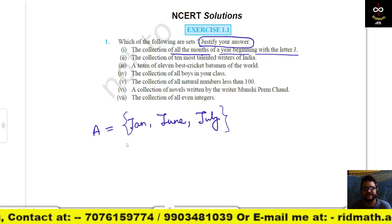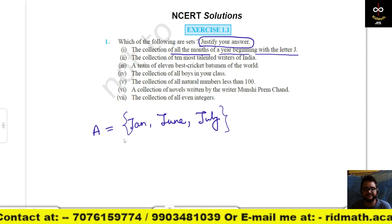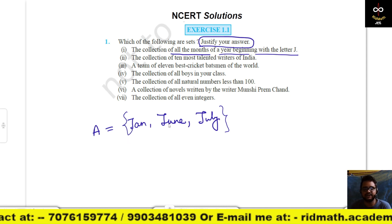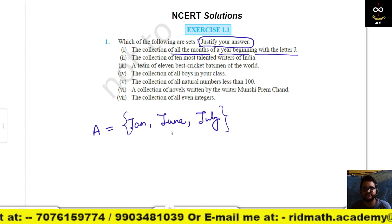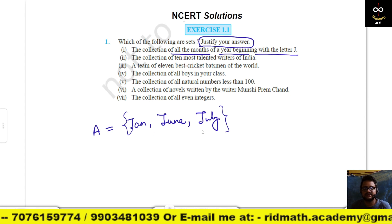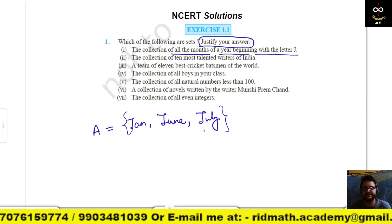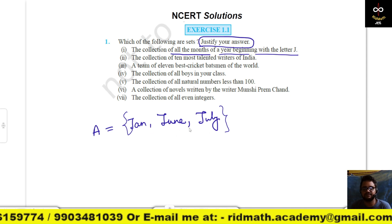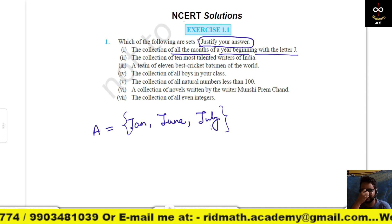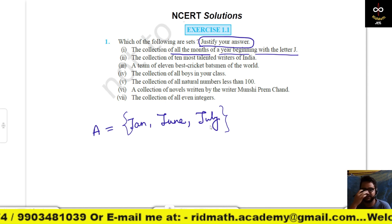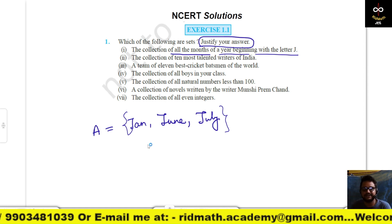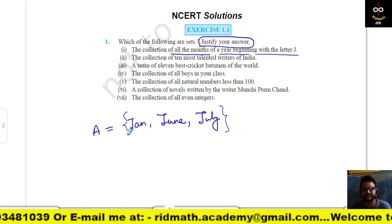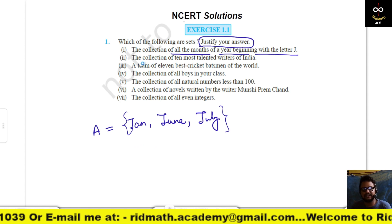This is well-defined because we cannot include any other months or exclude any of these three months from this collection. So this is a well-defined collection and it is a set.